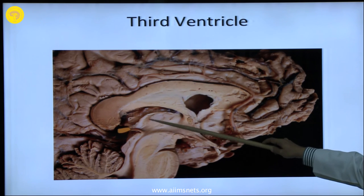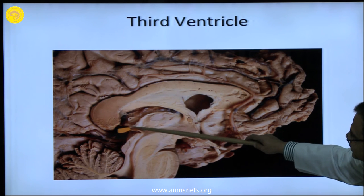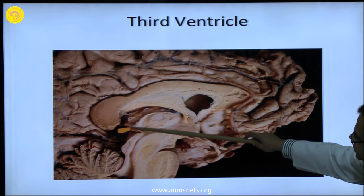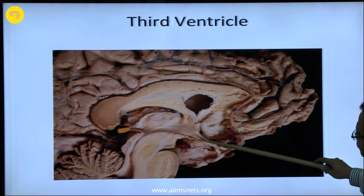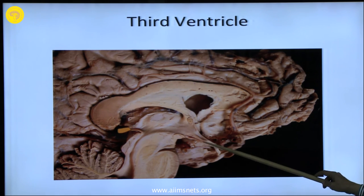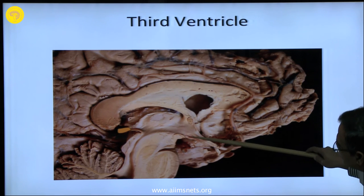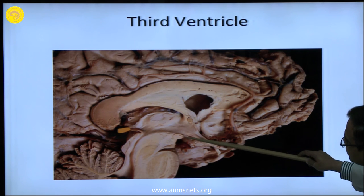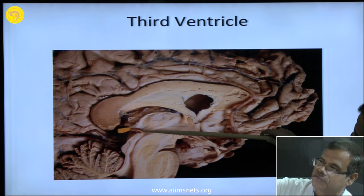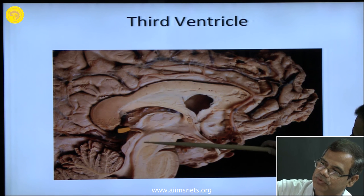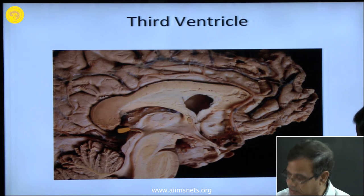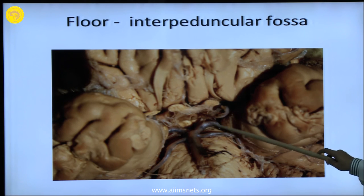The posterior boundary is the pineal, which always goes out. We have the pineal with the stalk, and there is a trigone here called the habenular trigone that also forms the boundary — this region is the posterior boundary of the third ventricle. The floor of the third ventricle contains structures of the interpeduncular fossa: the optic chiasma, the mammillary bodies, the tuber cinereum, the infundibular stalk, and this portion is part of the subthalamus — this area is the hypothalamus and the junction between the midbrain and the hypothalamus.